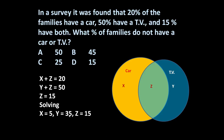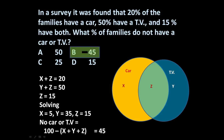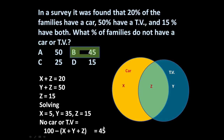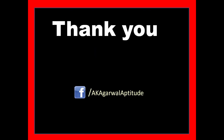Adding 5 plus 35 plus 15 gives 55, so 55% of families have a car or TV. Therefore 100 minus 55 equals 45, meaning 45% of families do not have either a car or TV. Thank you very much for watching this video. You can also follow me on Facebook. Thank you.